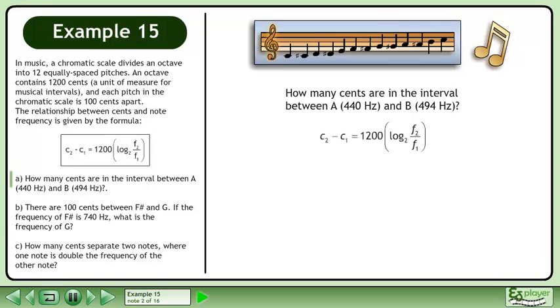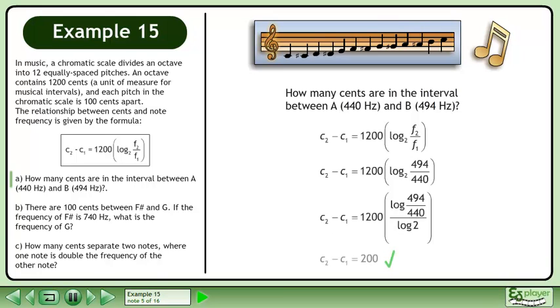Rewrite the cents formula. Plug in 494 Hz for the higher frequency and 440 Hz for the lower frequency. Evaluate the base 2 logarithm using change of base. There are 200 cents between the notes. Note that we don't require individual cents, just their difference.